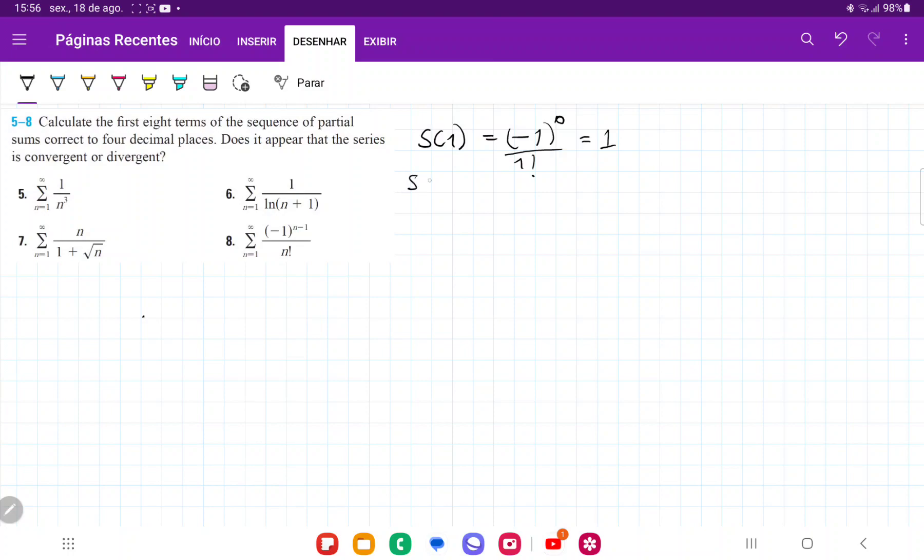S(2) is going to be equal to the previous term, S(1), which was 1, plus (-1) to the power of 2 minus 1, which is 1, over 2 factorial. When we sum this up, we get 1/2.